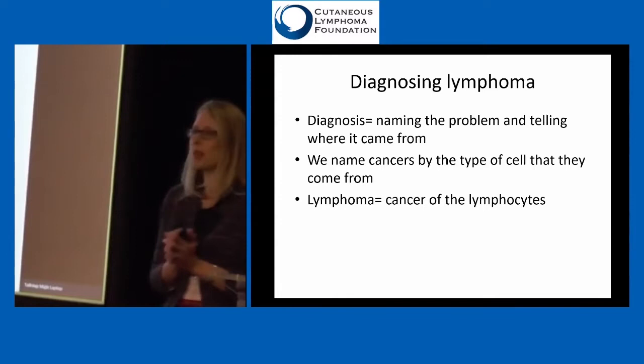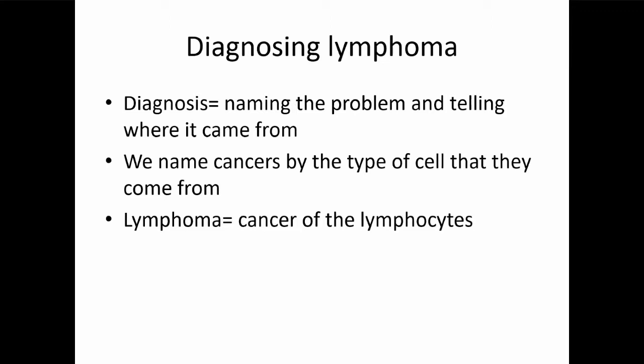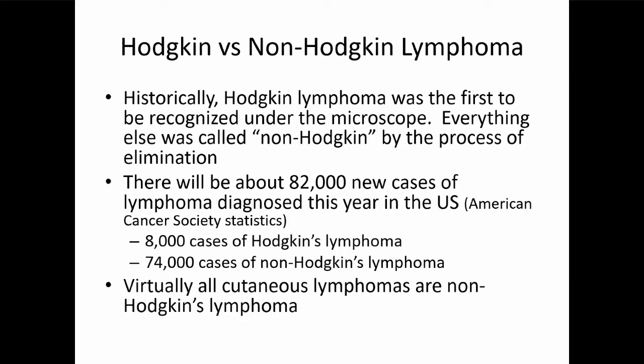Diagnosing a lymphoma. Making a diagnosis is naming the problem and telling where it comes from. We name cancers by the type of cell that they come from originally. As Dr. Wood had said, a lymphoma is a cancer of the lymphocytes. Everyone always wants to know what's a Hodgkin's lymphoma, what's a non-Hodgkin's lymphoma. Virtually every cutaneous lymphoma is a non-Hodgkin's lymphoma.